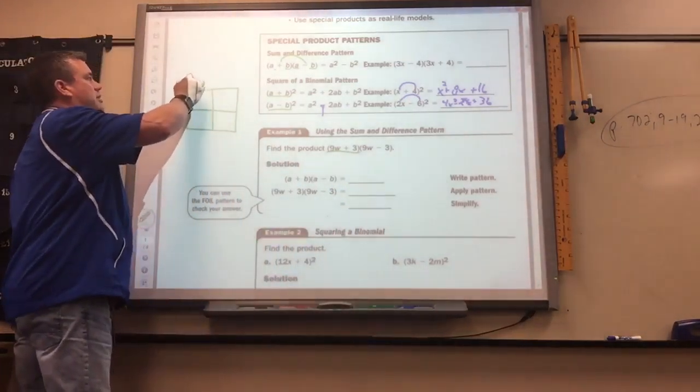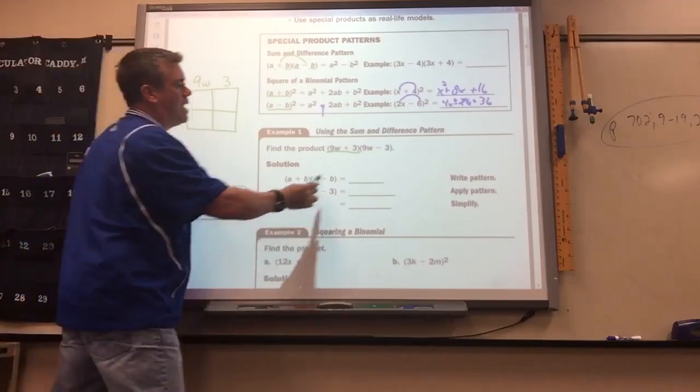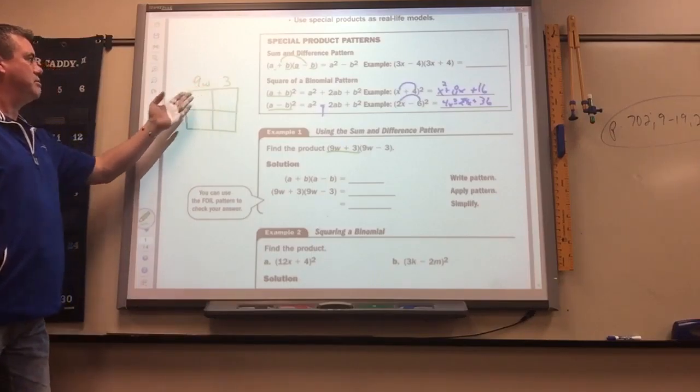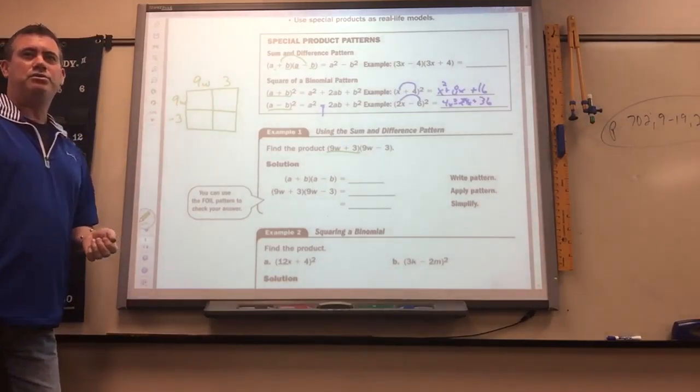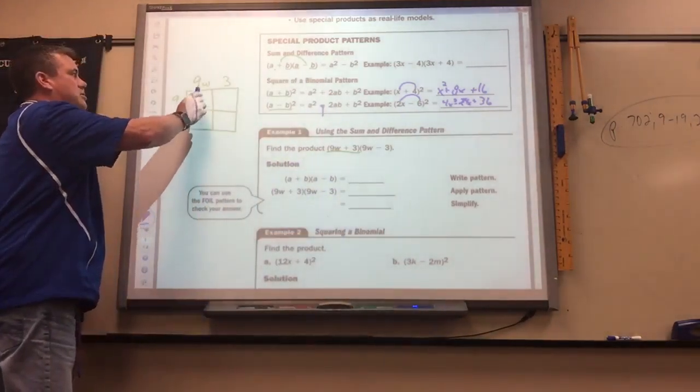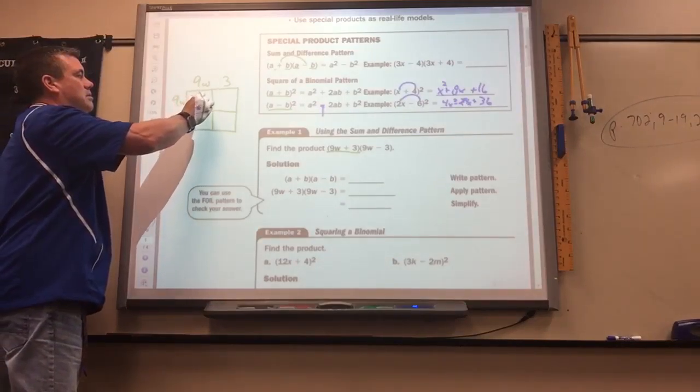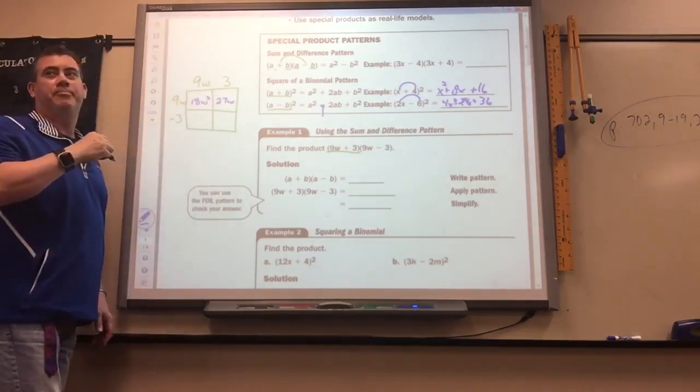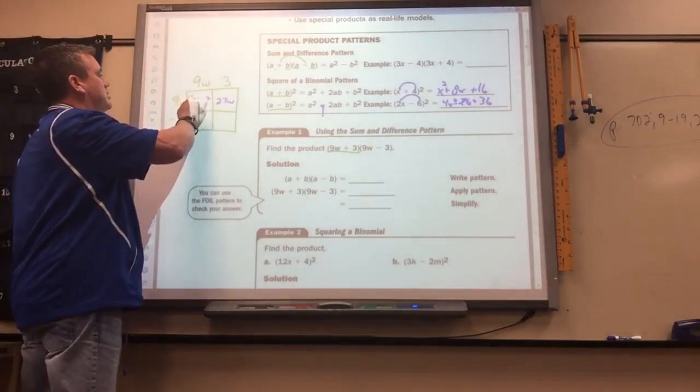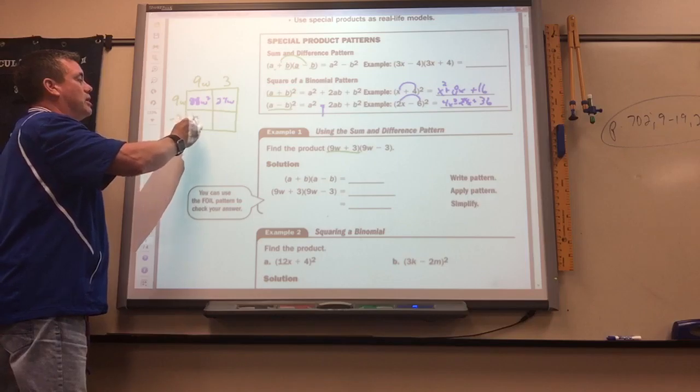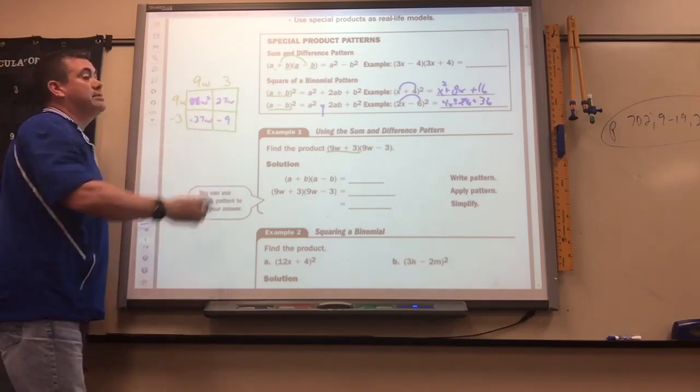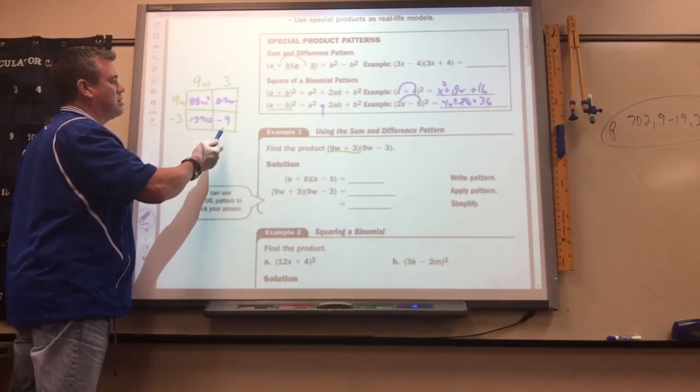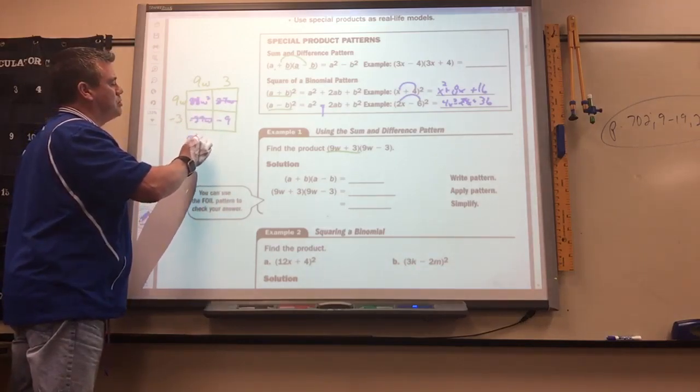You can make a box like this. And you put one of the binomials here and then the other binomial on the other side. So it's a 9w, a positive 9w, a positive 3, a 9w, a negative 3. And then you just multiply the boxes. To get this, you've got to multiply these two. To get this one, you multiply the 3 and the 9w. To get this one, you'd get negative 27w. And to get this one, you'd get negative 9. So then you kind of got everything there, and then you can combine like terms.